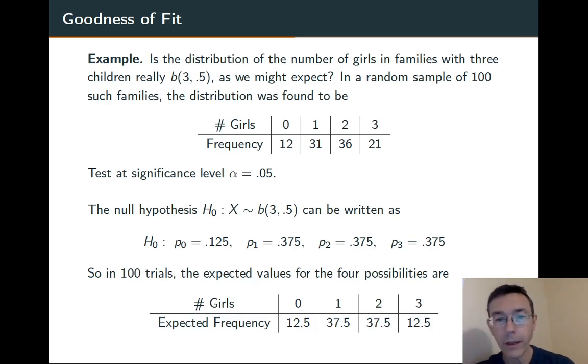So translating that into numbers in the sample, multiplying by 100, we expect that 12.5 of the families will have no girls, 37.5 of the families will have 1 girl, etc. We don't worry about the fact that these aren't integers. These are expected frequencies, not actual numbers of families.